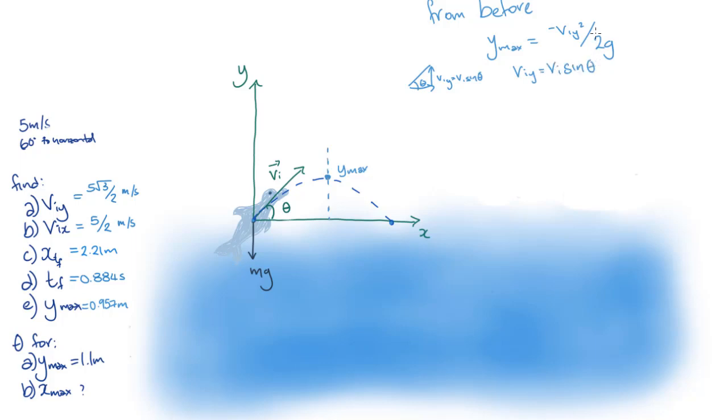Rearranging for viy, and then swapping viy for vi times sine theta, we get an equation we can solve. Now we want to get theta on its own. We divide both sides by vi and take the inverse sine of both sides. Plugging in all values and calculating, we get 68.2 degrees to three significant figures.